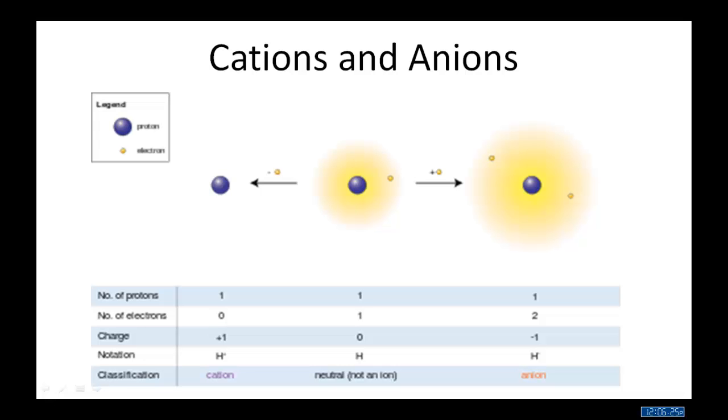Positively charged particles are also called cations, which we will get into in another unit. Notice the size of the atom. Has it gotten bigger than the center atom, or smaller? It's gotten smaller. Much smaller.